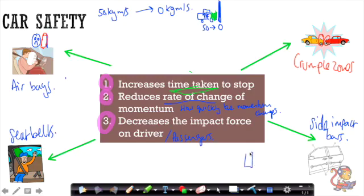So sometimes you'll get side collisions. If you're driving along, another car might come in from the side and hit you from the side there. And if that happens, these side impact bars will mean that the front of that other car will crumple up. And also you'll have a slight crumple zone in the side of your car as well. And altogether that will increase the time taken for this car to stop, reduce the rate of change of momentum and decrease the force that is applied to the drivers in this car.